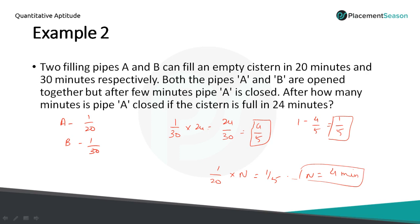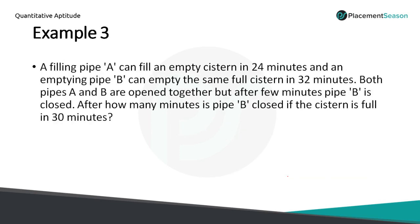Examples 1 and 2 are similar problems, except for the data provided. Example 3: In the first examples we discussed only filling pipes. In this problem we also include an emptying pipe. A filling pipe A can fill an empty system in 24 minutes, and emptying pipe B can empty the same system in 32 minutes. Here B is negative, meaning it is emptying.